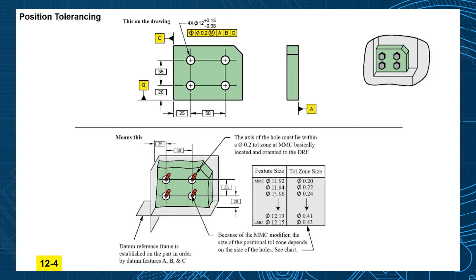So let's at first show a review from what we've shown most of the class already, regular old position tolerance. So here we have our datum reference frame established as back face is A, bottom edge is B, and side edge is C.